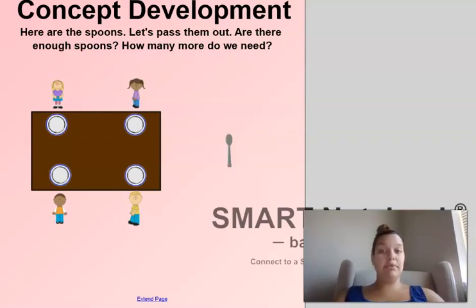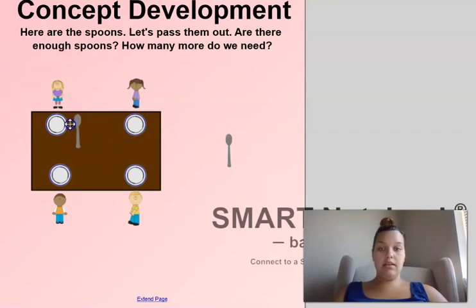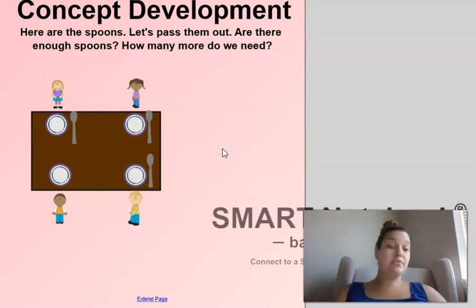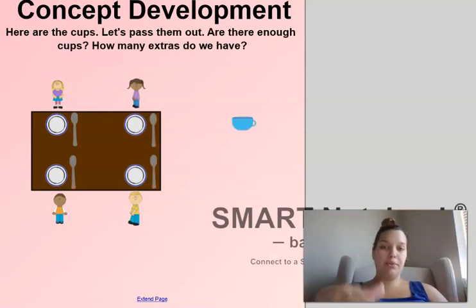Let's see what else we need for our popcorn party. Now we need to pass out the spoons. One, two, three. What happened? There aren't enough spoons. You're right. He doesn't have a spoon and we don't have any left. So do we have enough? No we do not have enough spoons for our popcorn party. Don't worry though I went to the store I got him a spoon. See he's all set now.